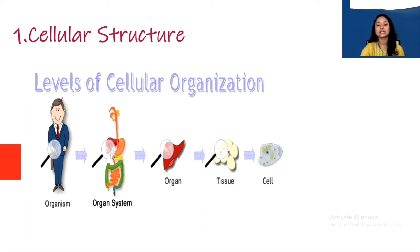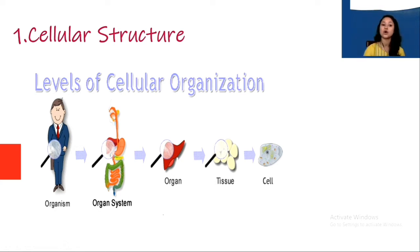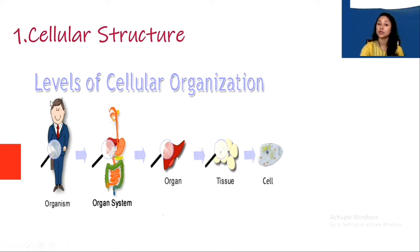Let's get started with the very first characteristic: cellular structure. As we know, cell is said to be the basic unit of life. Cells aggregate to form tissues, tissues aggregate to form organs, organs form organ systems, and the organ system becomes the complete organism. The activities occurring in the organism are the sum total of activities occurring in the cell.